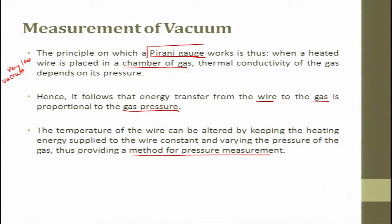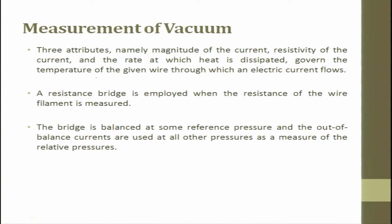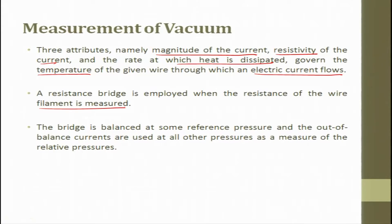This is one of a very important gauge which even now finds application. Three attributes — namely magnitude of current, resistivity of the current, and the rate at which heat is dissipated — govern the temperature for a given wire through which electric current flows. A resistance bridge is employed; when the resistance of the two filaments is measured, the bridge is balanced at some reference pressure and the out-of-balance currents are used at all other pressures as a measurement of relative pressure.